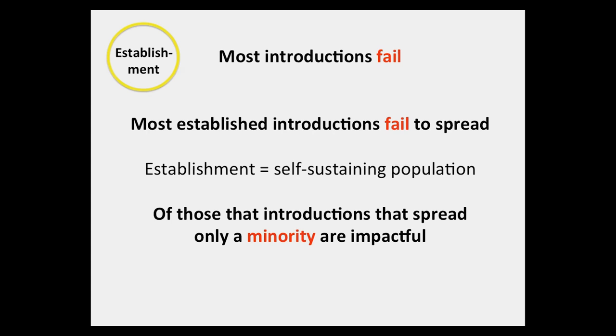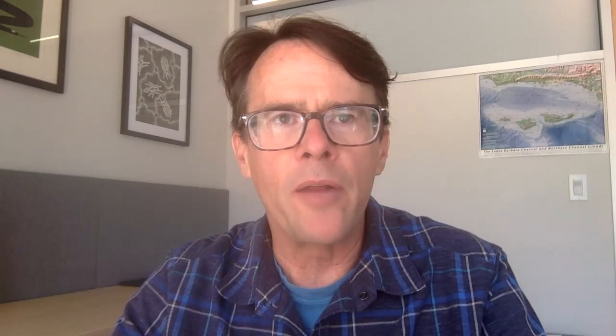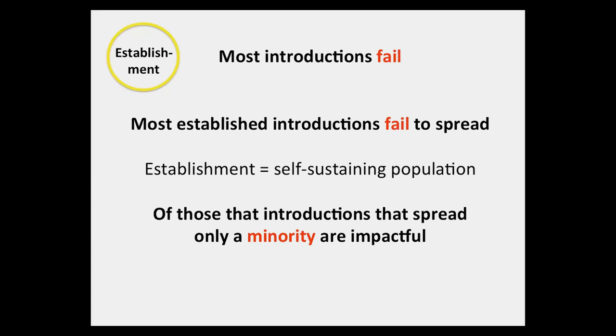One of the interesting aspects of biological invasions is that most introductions fail. This phenomenon is well studied in intentional introductions where information about the number of individuals and the timing of an introduction event are often recorded. For unintentional introductions, which represent a large number of biological invasions, it's impossible to know why introductions fail because the introductions took place without anybody knowing about them. Another generality is that most established introductions fail to spread, and even those that do spread, only a minority become environmentally impactful.